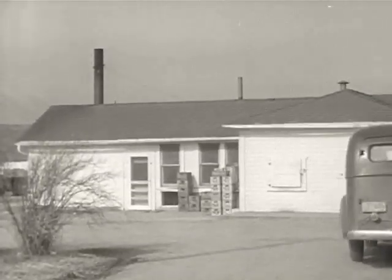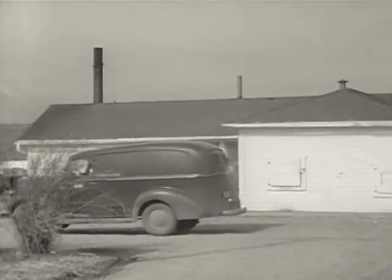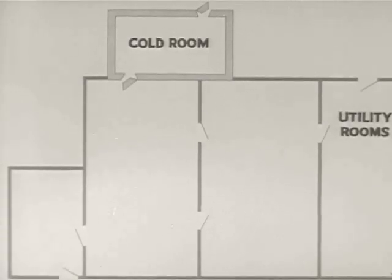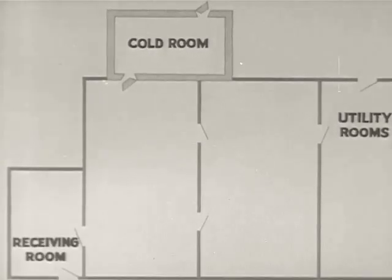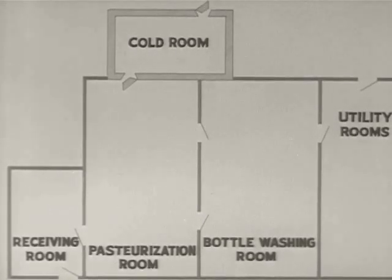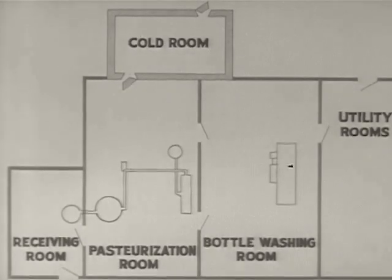Perhaps you work in a small plant like this. The building is well built and kept in good repair. Besides a cold room and utility rooms, this plant has three rooms for handling milk and milk containers. The receiving room, the pasteurization room, the bottle washing room. These rooms contain equipment especially designed to protect the milk from contamination.